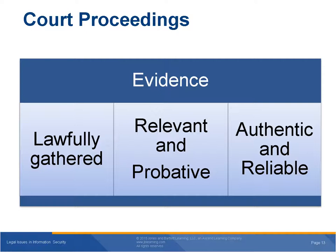It is important that evidence used in a court case be admissible. A judge or jury can consider only admissible evidence when deciding cases. Evidence that is invalid for some reason is called inadmissible evidence, and it cannot be presented to a judge or jury. A judge or jury who accidentally hears about inadmissible evidence cannot consider it later in deliberations. Admissible evidence is good evidence; inadmissible evidence is bad evidence. The examiner must gather evidence in a way that makes it admissible in court.